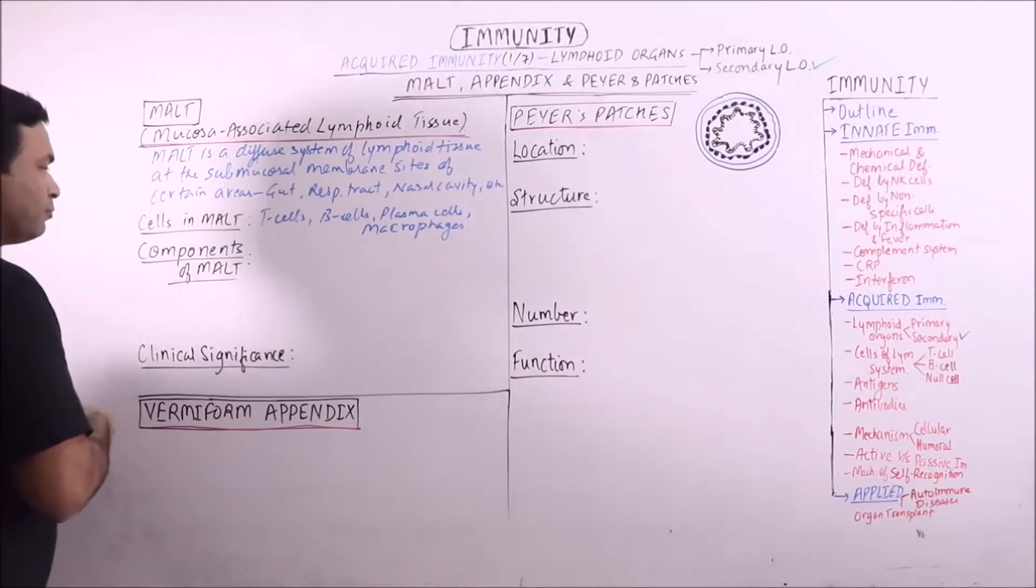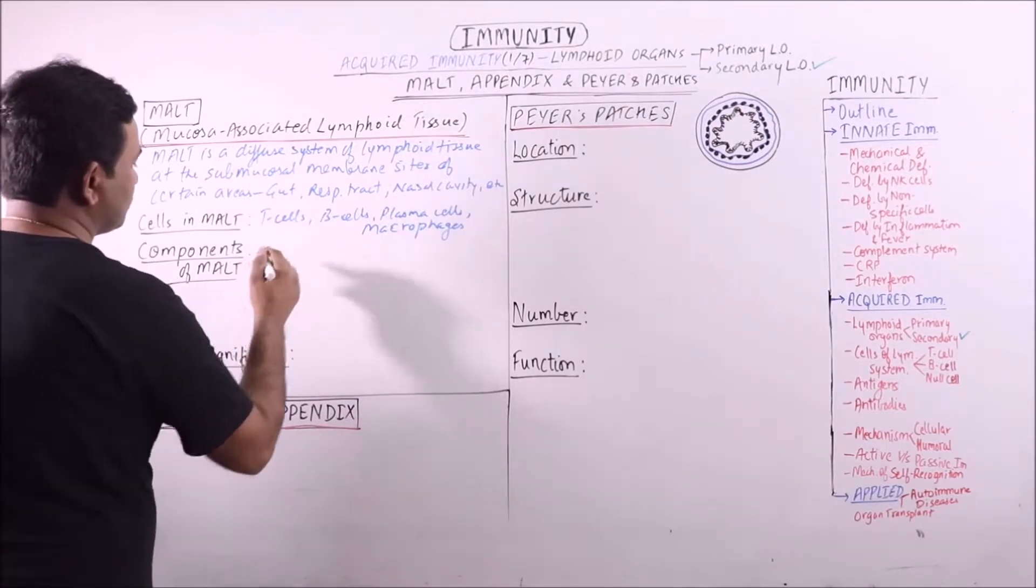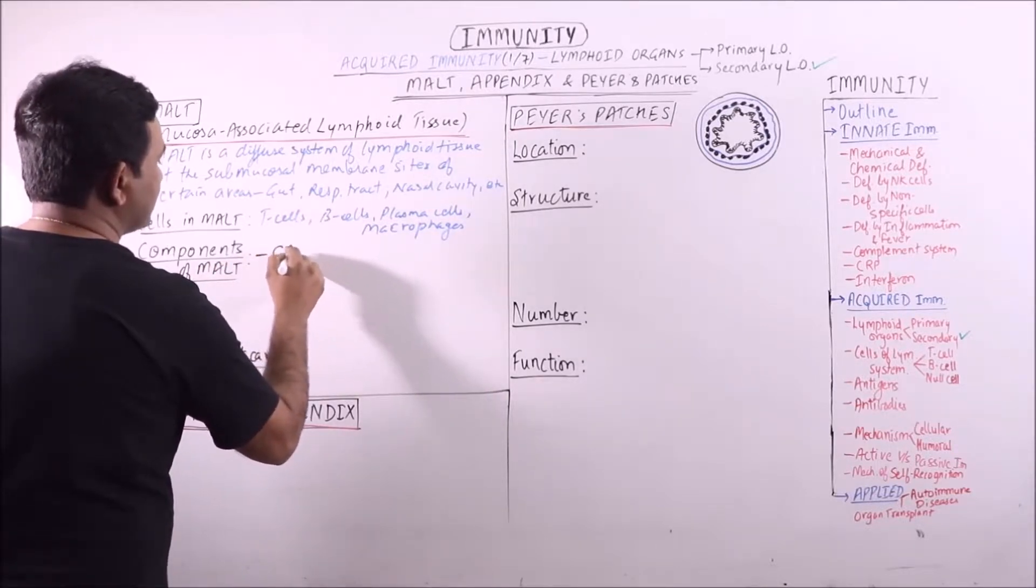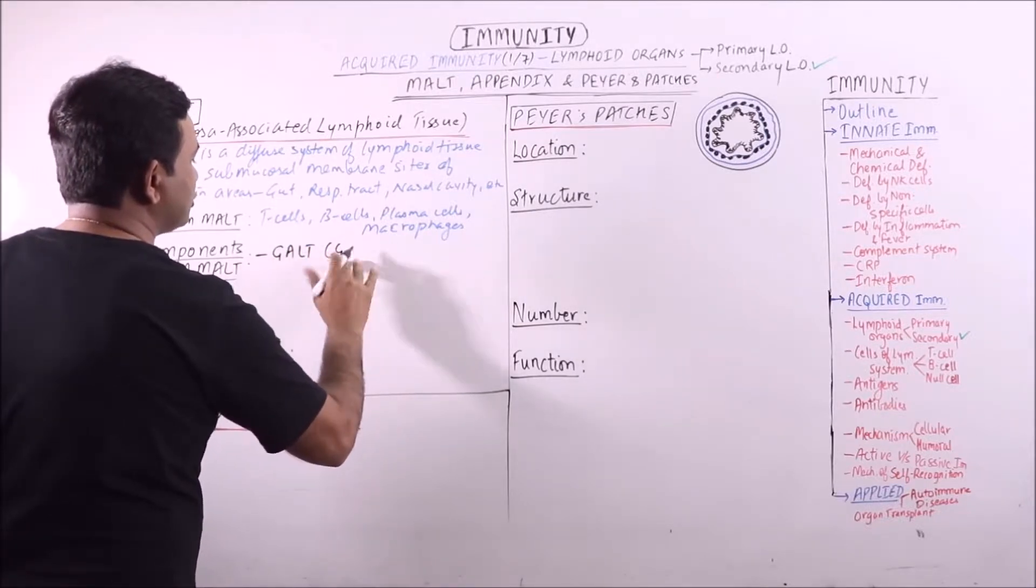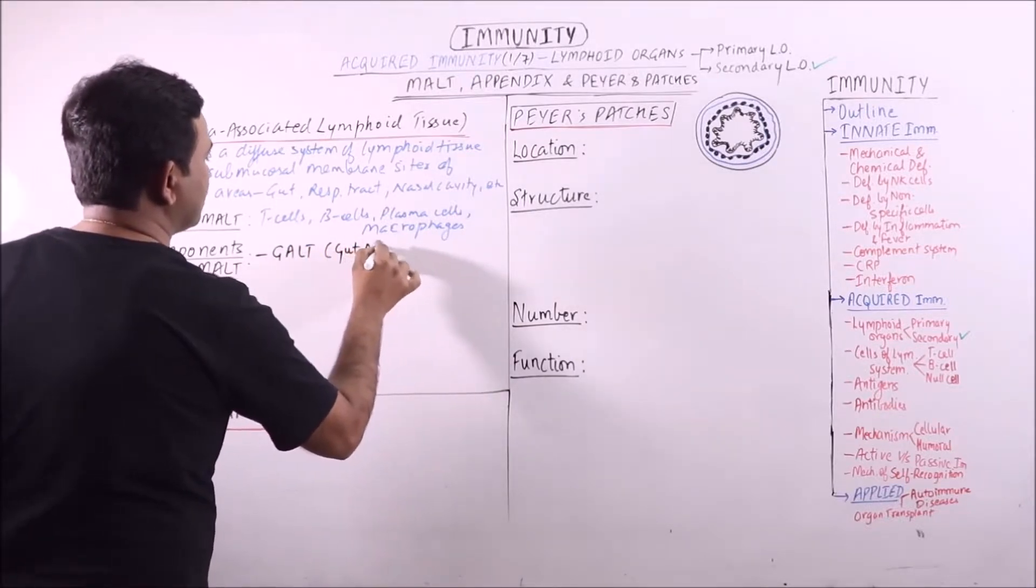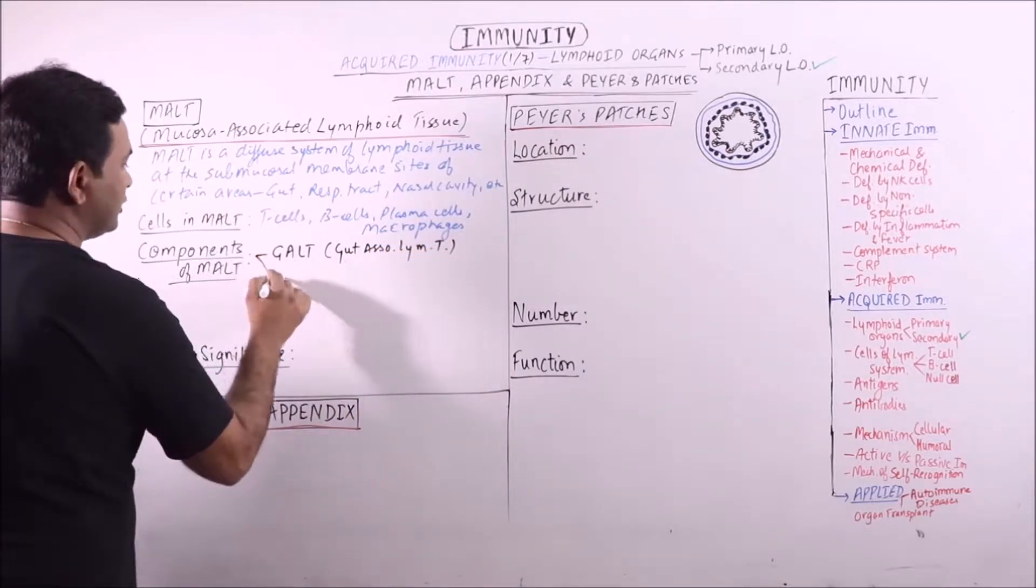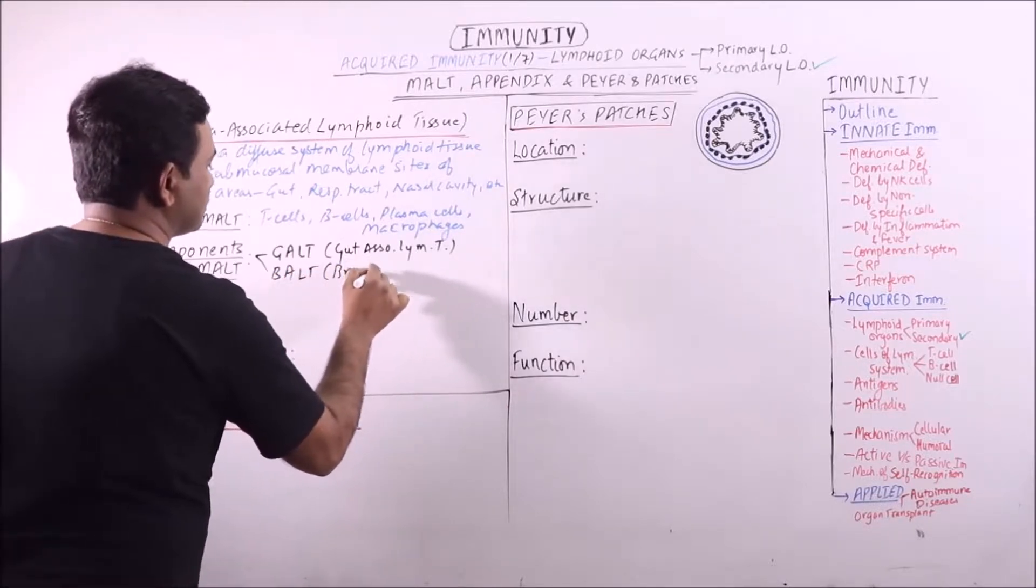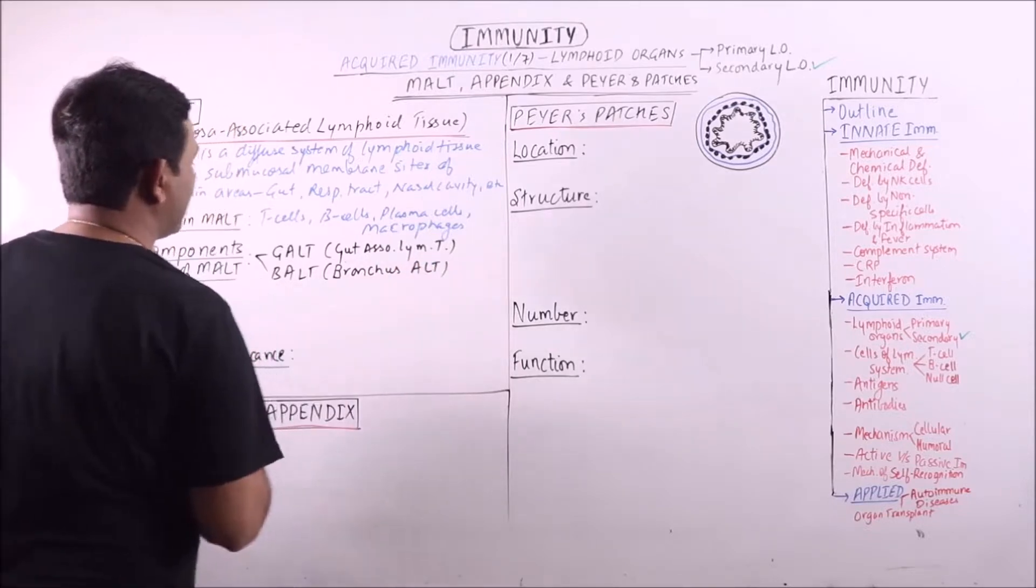Now the components of MALT. If the MALT is located in gut, it is known as GALT, gut-associated lymphoid tissue. In the same way, bronchus-associated lymphoid tissue is BALT.